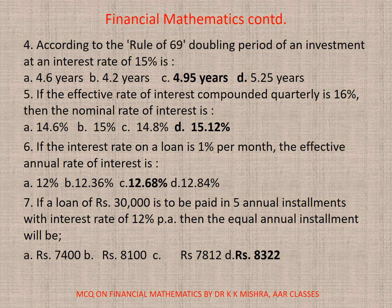Question 7: If a loan of rupees 30,000 is to be paid in 5 annual installments with an interest rate of 12% per annum, then the equal annual installment will be — correct option is D — rupees 8,320.